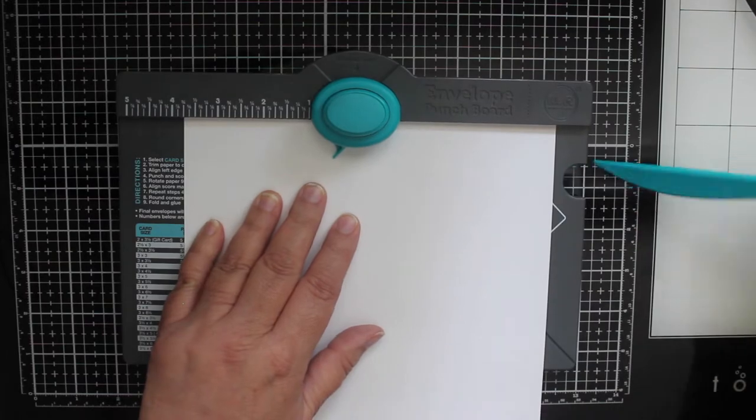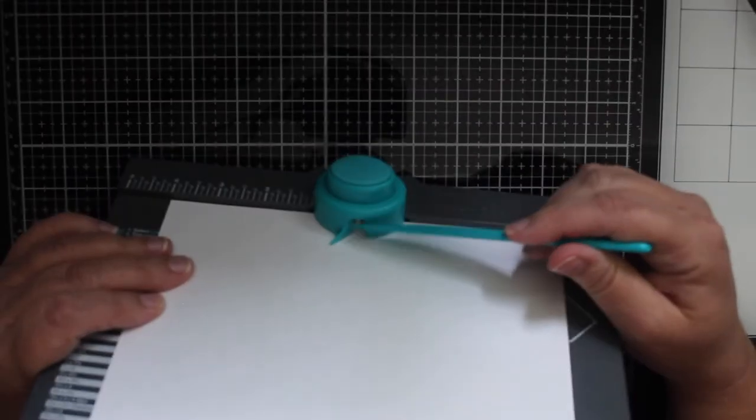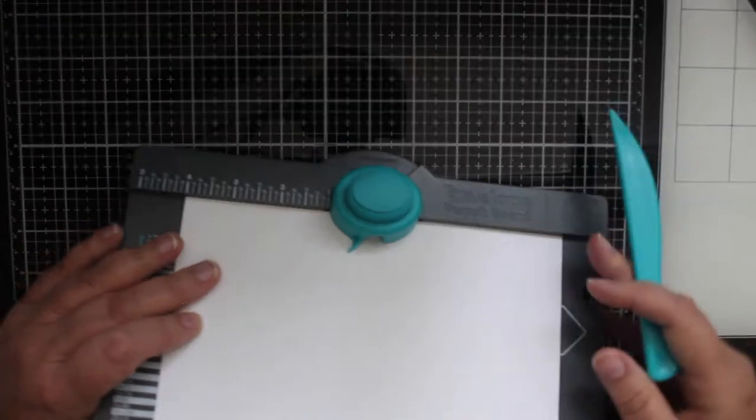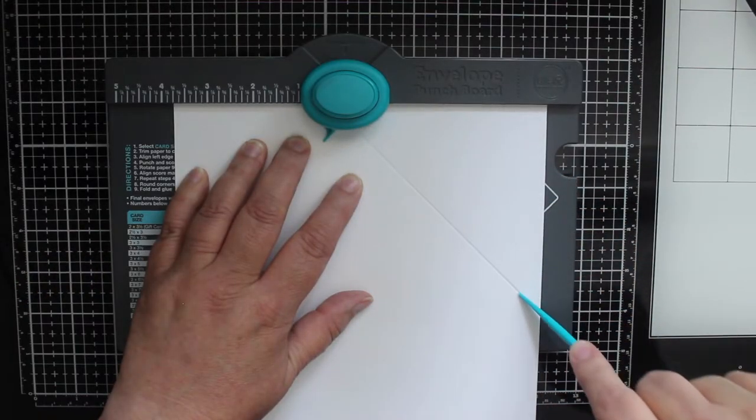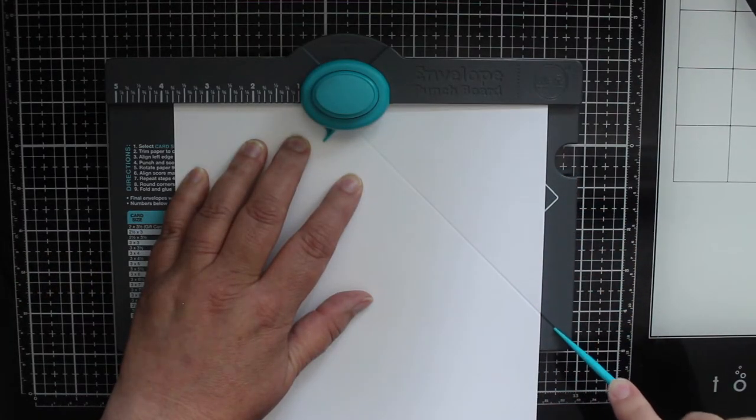I'm placing the tip of my bone folder in the notch under the punch piece. I'll find the groove under my paper with the tip of the bone folder and pull straight down the groove to score the paper until I reach the bottom of the groove.